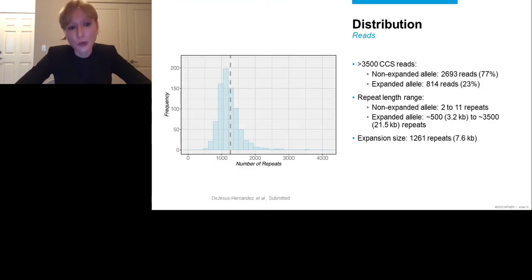Then we looked at the distribution of the reads, and we were able to obtain more than 3,500 CCS reads in total, all individuals combined, including almost 2,700 reads for the wild-type allele, and more than 800 for the expanded allele. And subsequently, we said, okay, let's look at the length. Let's look at the length of the wild-type allele, and it varied between two repeats and 11 repeats. And that's correct, because we were able to compare it to the results of our fluorescent PCR. We then looked at the expansion, and the expansion size varied from roughly 3 kilobases to more than 20 kilobases, basically 500 repeats up to 3,500 repeats. A histogram is shown on the left, and in this histogram, you can see the frequency and the number of repeats. And the dashed line indicates the median of the samples we investigated, and the median was 1,261 repeats, so almost 8 kilobases.